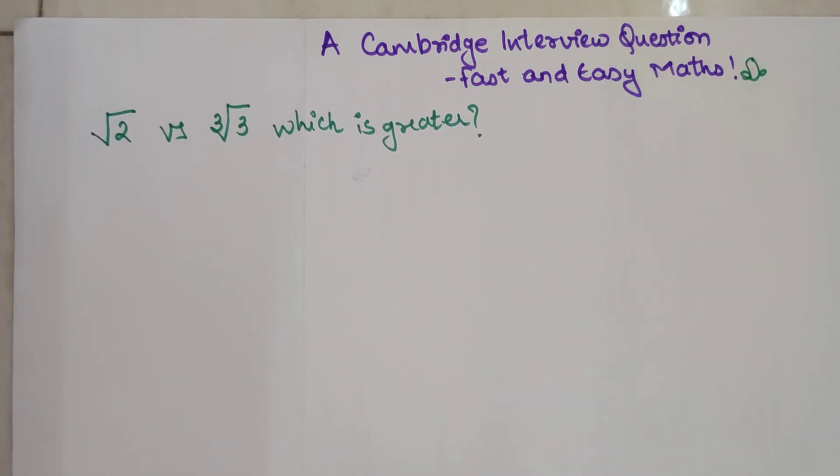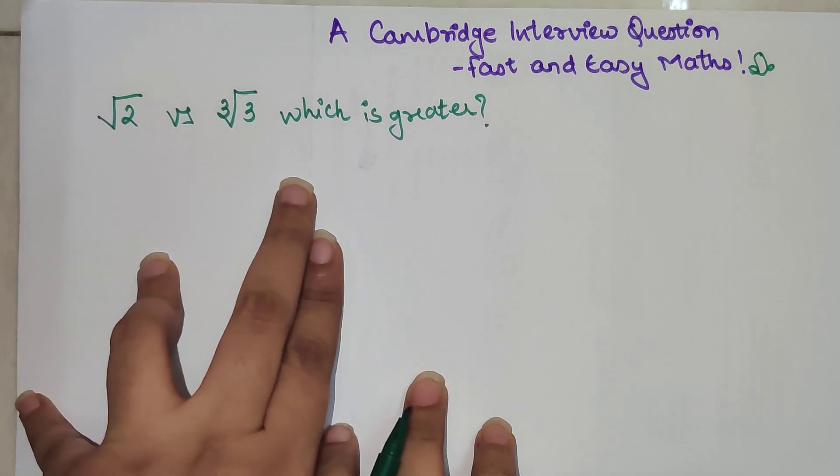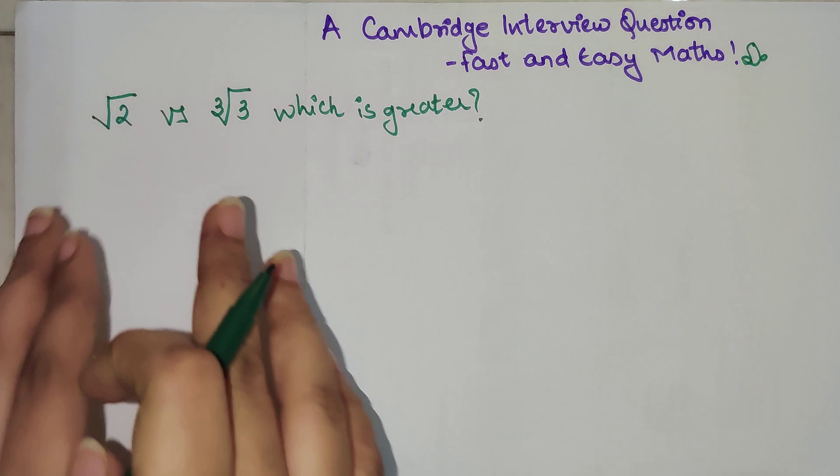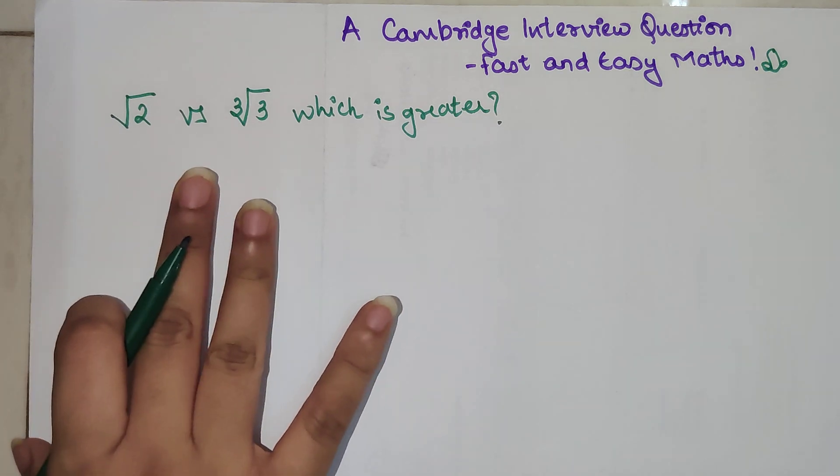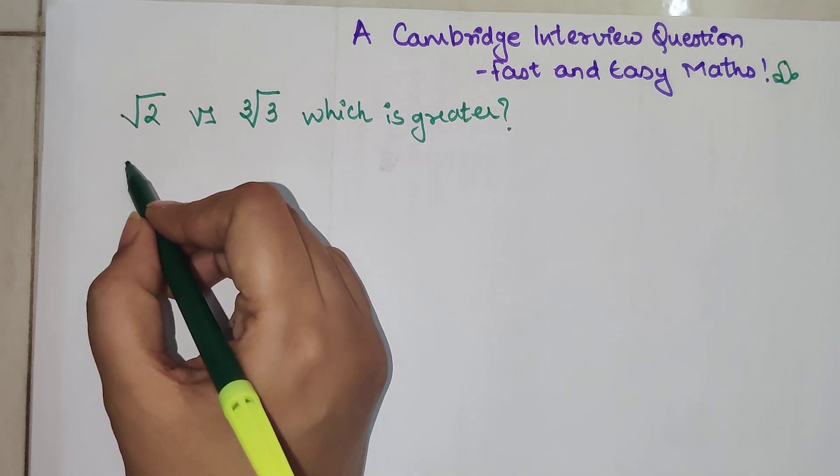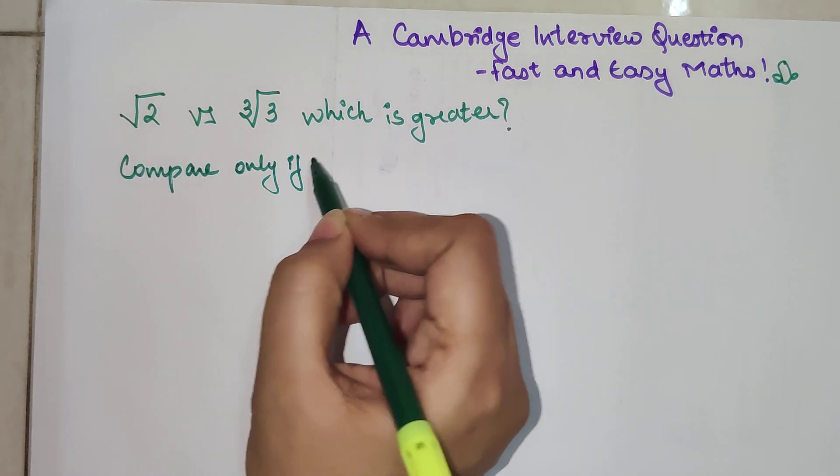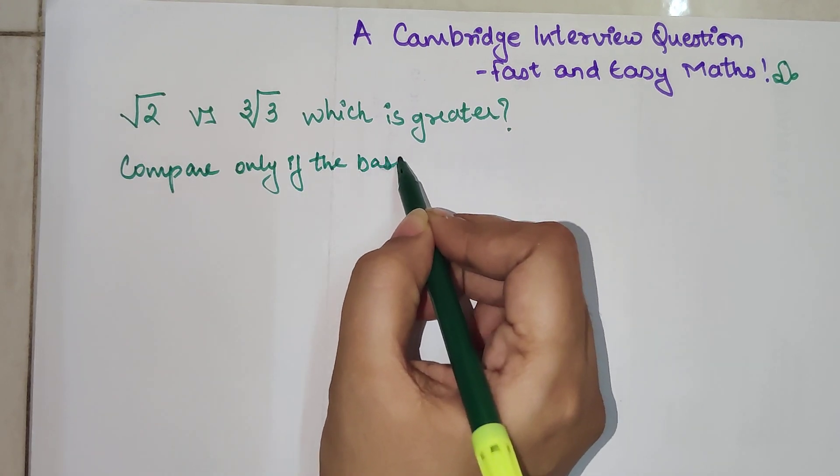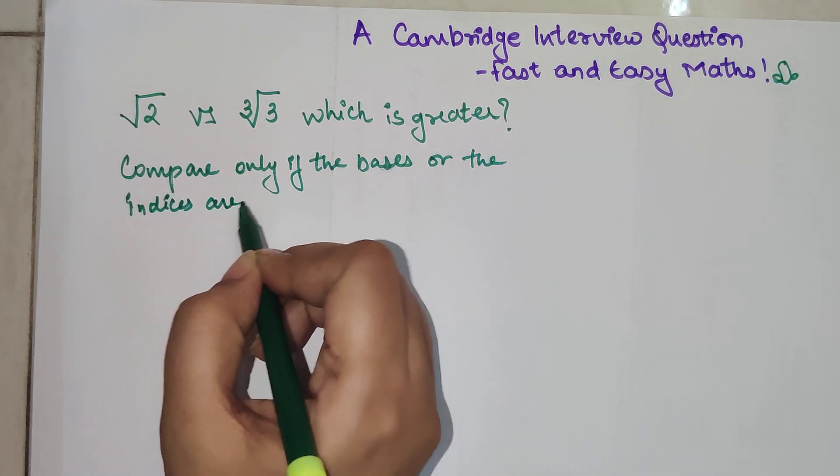Today we are going to discuss a question which was asked in a Cambridge interview. The question is: root of 2 versus cube root of 3, which is greater? So these two entities they were asked to compare. That will not be possible directly because you can compare only if the bases or the indices are same.